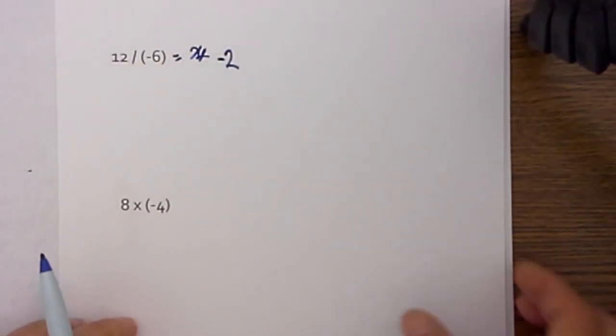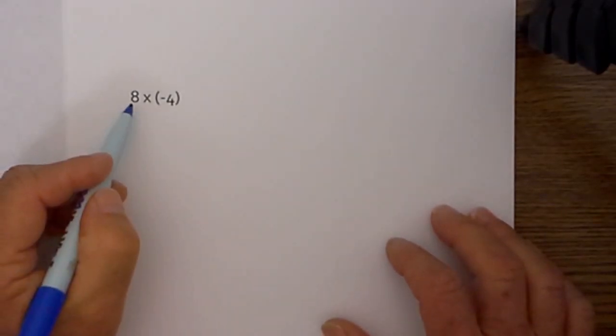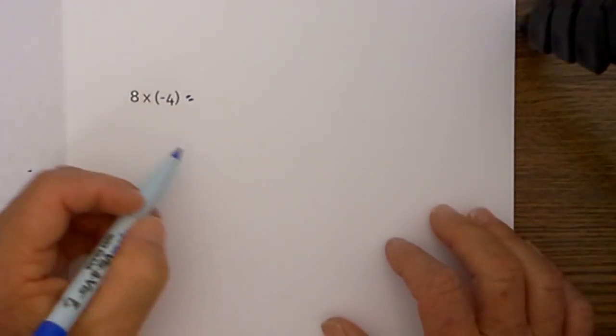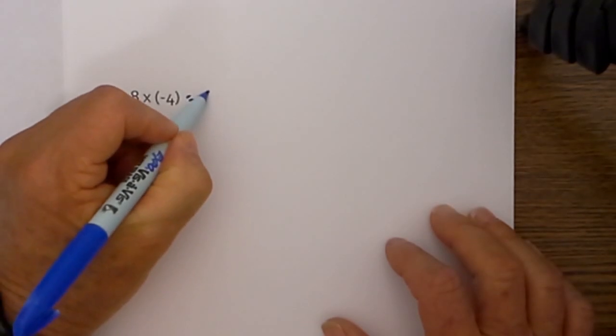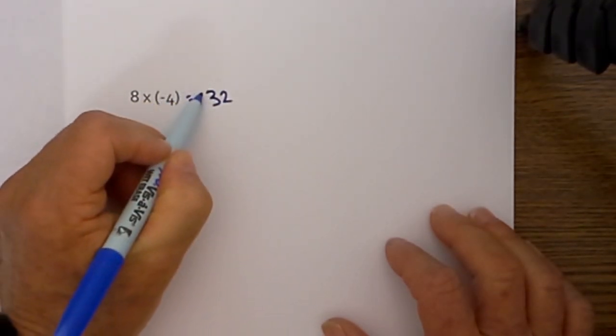And the last one, we have 8 times 4. And that is 8, 16, 24, 32. And we have one negative sign so it is negative.